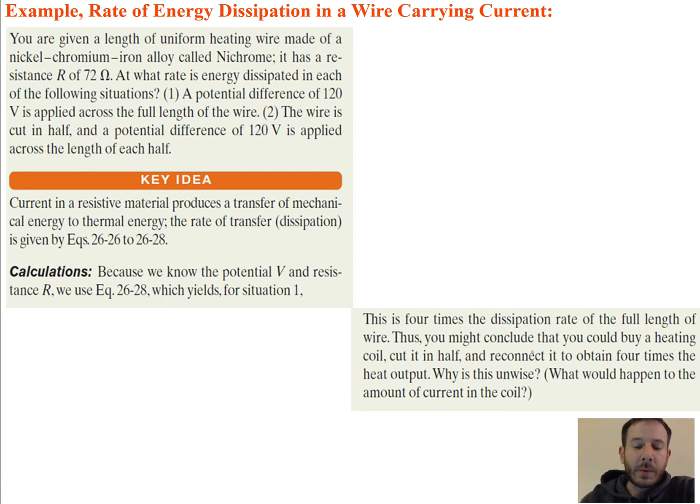So let's do one quick example. We're looking at the rate of energy dissipation in a wire that's carrying current. You're given a length of uniform heating wire made of nickel-chromium iron alloy called nichrome. It has a resistance of 72 ohms. At what rate is energy dissipated in each of the following situations? A potential difference of 120 volts is applied across the full length of the wire. And then the second situation is the wire is cut in half, and the potential difference of 120 volts is applied across the length of each half of the wire.